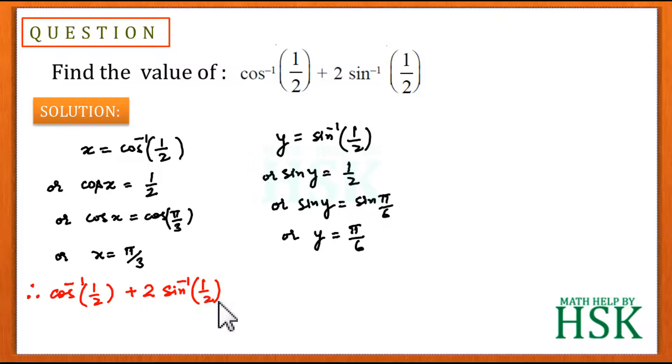Therefore, the value of cos⁻¹(1/2) + 2sin⁻¹(1/2) = π/3 + 2(π/6) = π/3 + π/3 = 2π/3. This is our required answer.